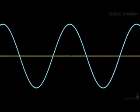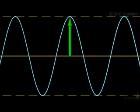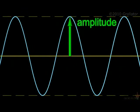The maximum distance the vibration moves away from the wave center line is called the amplitude of the wave. The amplitude essentially tells us how noticeable the wave is.